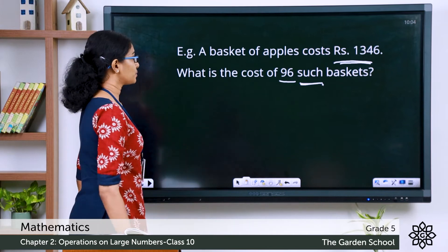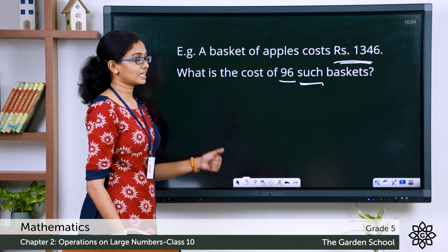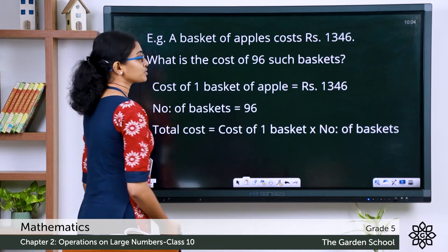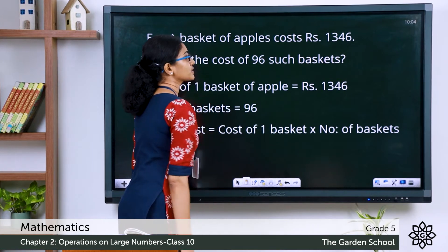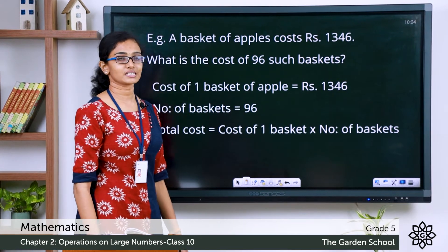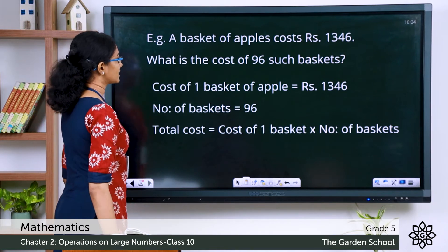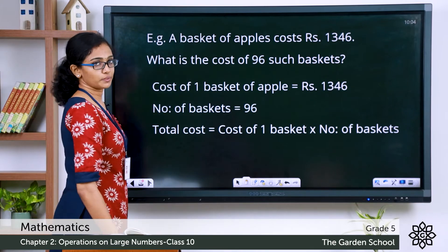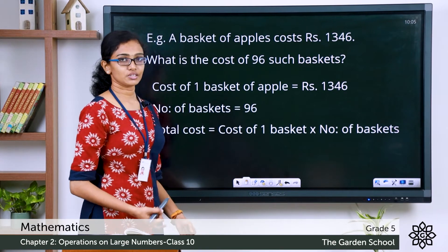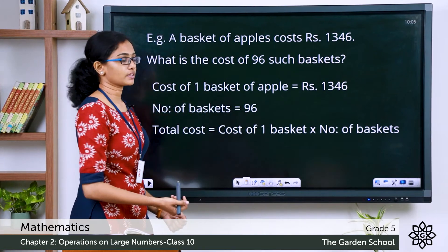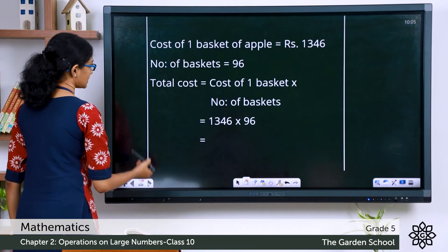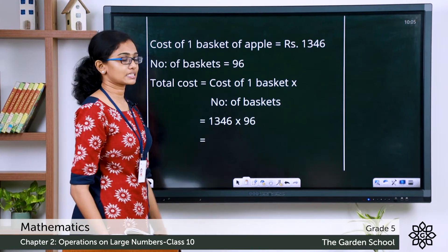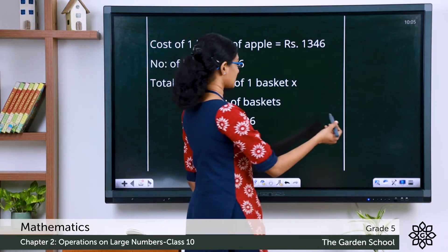Since one basket costs rupees 1346 and there are 96 such baskets, we can find the total cost by multiplying the number of baskets with the cost of one basket. From the data in the question, let's write down the steps: cost of one basket = rupees 1346, number of baskets = 96, total cost = cost of one basket × number of baskets = 1346 × 96. Let's do the multiplication in the working column.